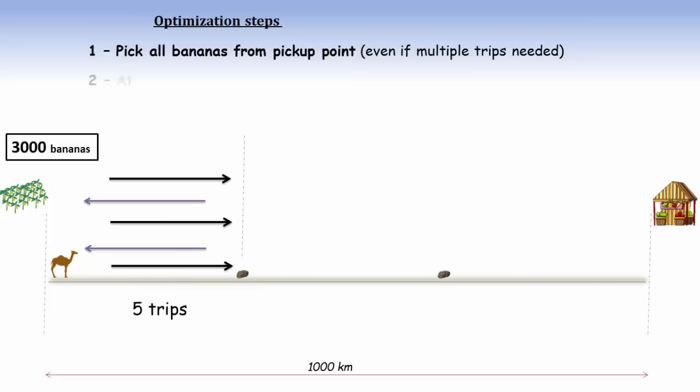Optimization step number 2. At the intermediate point, try to keep number of bananas in multiple of 1000. Only that way you would be able to utilize the trips of camel effectively. For example, if you have 1500 bananas, then to transfer them, the camel will need to make 2 forward trips.